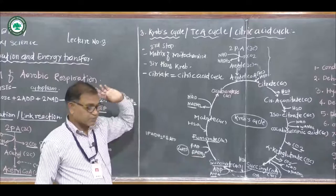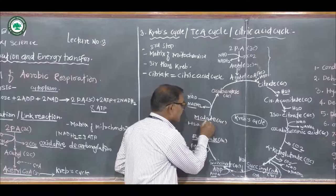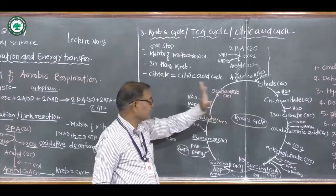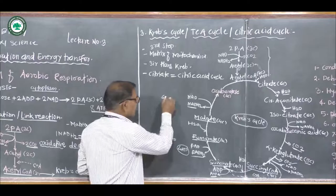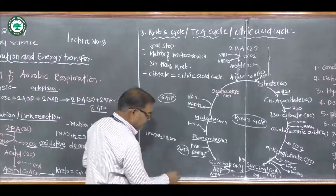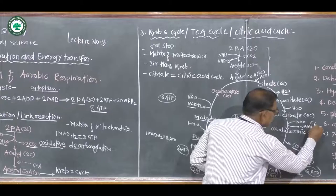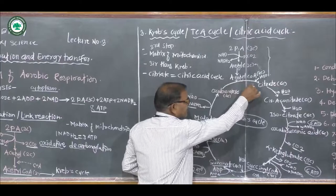Fumarate is further converted by addition of a water molecule to form malate, also a four-carbon compound. Malate is further oxidized to form oxaloacetate, also a four-carbon compound. In this step, a pair of hydrogen is liberated and accepted by NAD to form NADH2. In this step, 6 molecules of ATP are generated, plus 2 ATP from direct substrate-level phosphorylation.